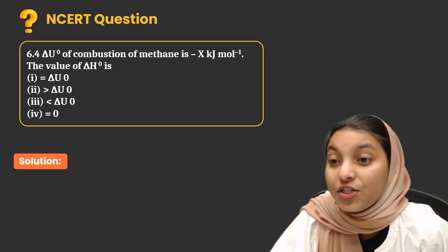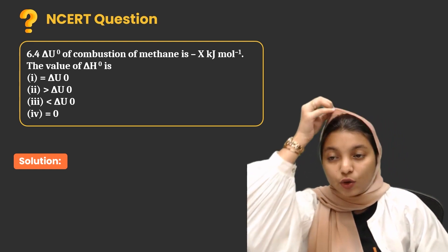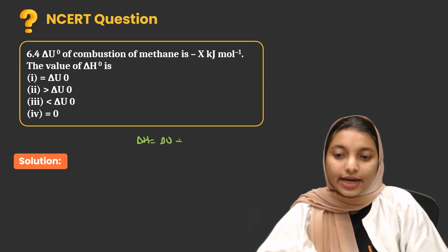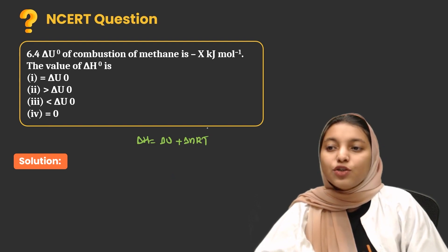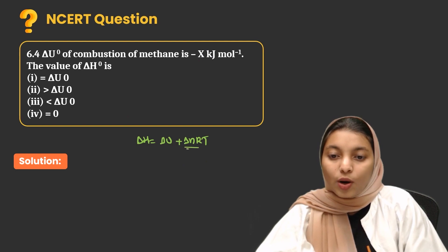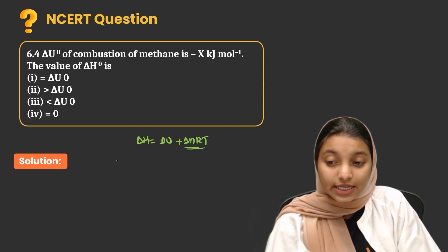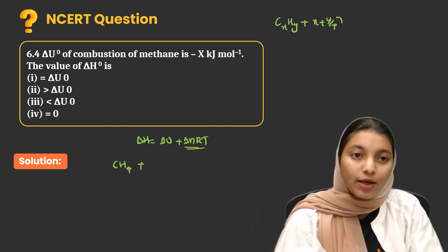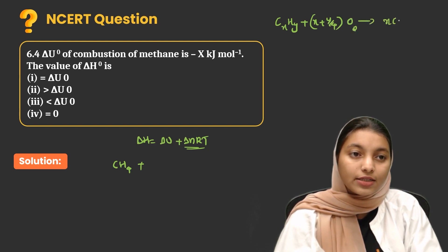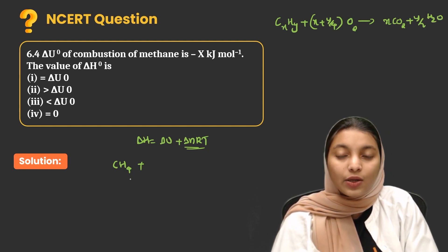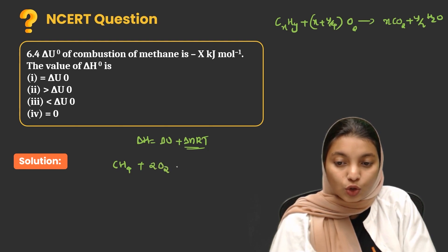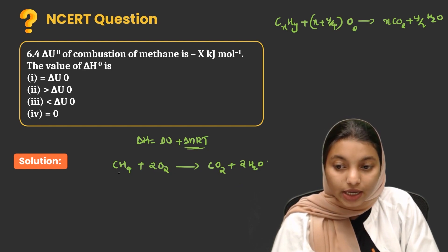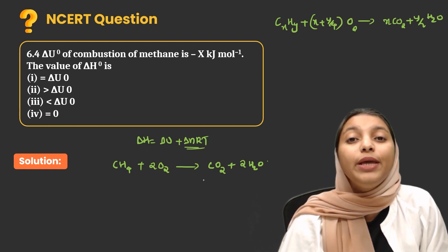Delta U naught — the internal energy change of combustion of methane — is minus x kilojoule per mole. The value of delta H naught is asked. We use the equation delta H = delta U + delta N·R·T. The delta U value is minus x, and we need delta N for the combustion of methane. Writing the combustion equation: CH4 + 2O2 → CO2 + 2H2O. So delta N = 1 (products gaseous) minus 3 (reactants gaseous) = minus 2... wait, moles of gaseous products minus gaseous reactants: 1 minus 3 = minus 2.